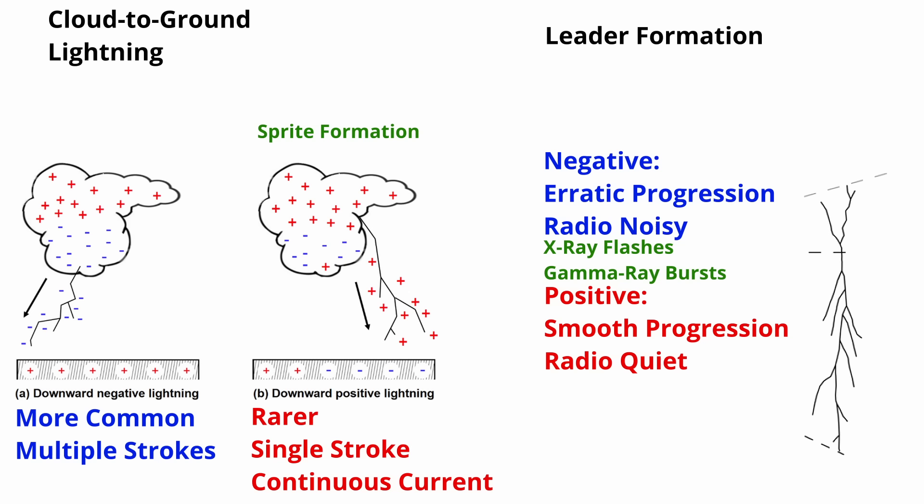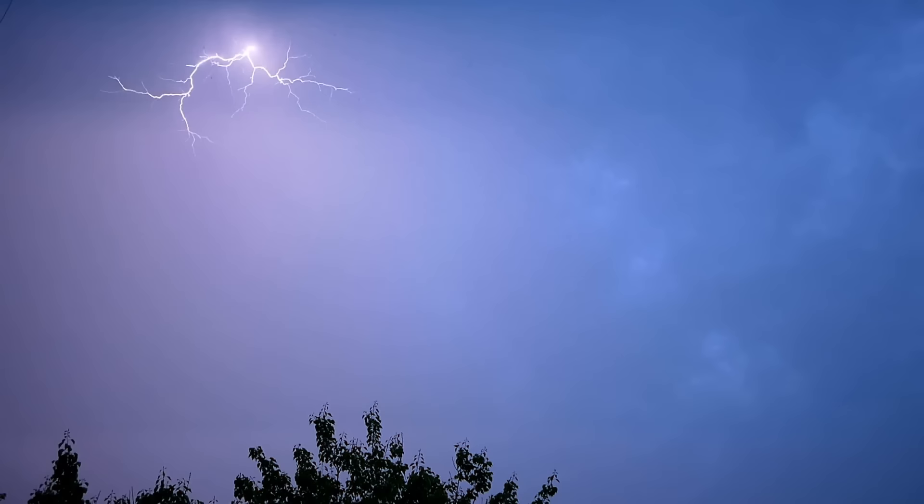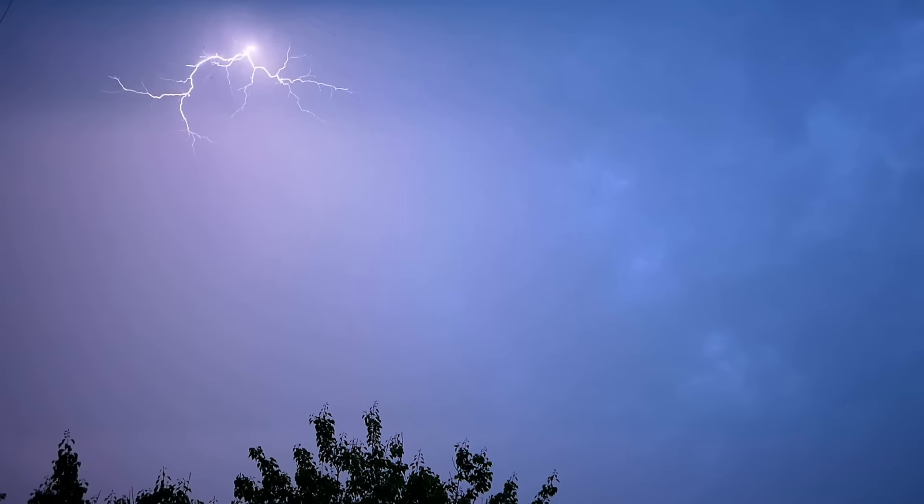And then there are sprites, which are exclusively generated by positive ground flashes. This nuanced understanding underscores the pivotal roles played by positive and negative flashes in shaping the dynamic symphony of the skies. Amidst the intricacies, there exists a profound order of the atmosphere, showcasing the orchestrated beauty within the realm of atmospheric electricity.